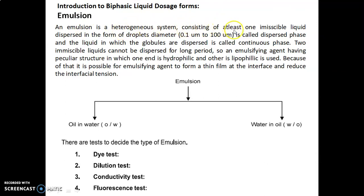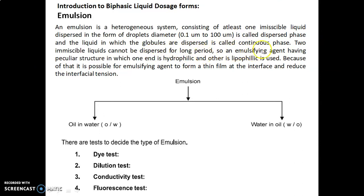Emulsion is a heterogeneous system consisting of at least one immiscible liquid dispersed in the form of droplets with a diameter of 0.1 micrometer to 100 micrometer, called the dispersed phase. The liquid in which the globules are dispersed is called the continuous phase. The two immiscible liquids cannot be dispersed for a long period, so an emulsifying agent having a peculiar structure — one end hydrophilic and the other lipophilic — is used. This allows the emulsifying agent to form a thin film at the interface and reduce the interfacial tension.